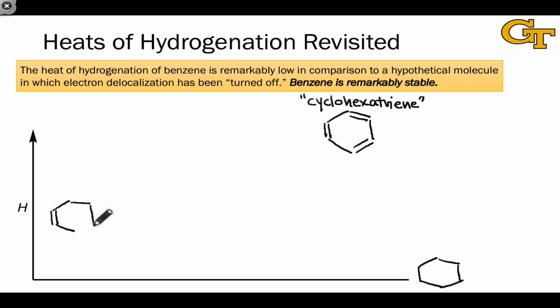Let's start with the enthalpy released when cyclohexene is hydrogenated. This is a compound with one double bond within a six-membered ring structure. The ΔH here is about -28.7 kcal/mol.